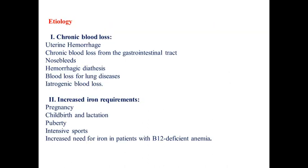The causes of iron deficiency anemia: in first place is chronic blood loss — uterine hemorrhage, any kinds of hemorrhage, nasal bleeding, or hemorrhagic diathesis. In second place is increased iron requirements during pregnancy, lactation, or intensive sport.